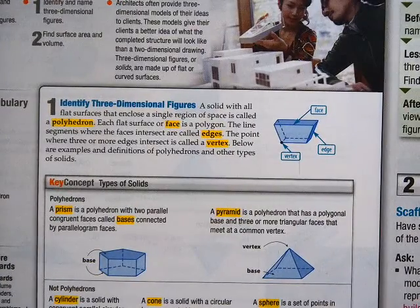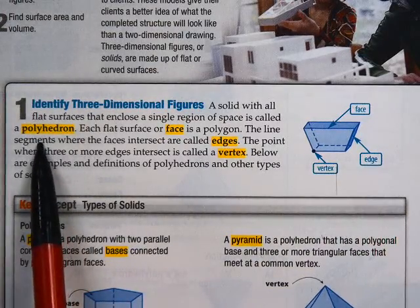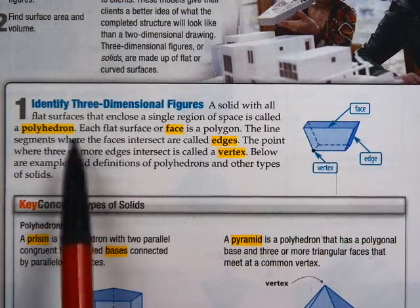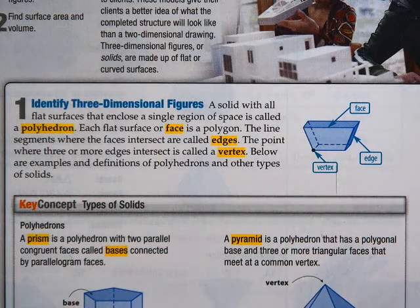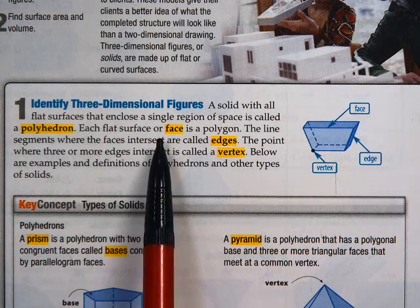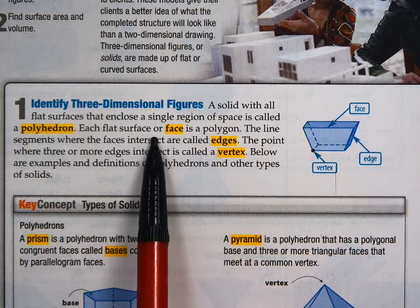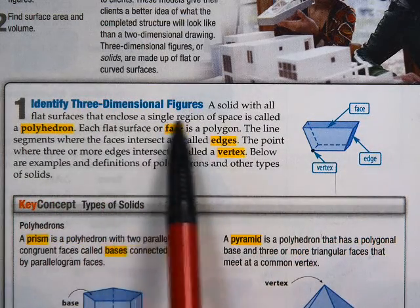Three-dimensional figures. Let me go over a couple definitions while I've got my book open. A polyhedron — a polyhedron is kind of like a polygon. A polygon is made of straight segments; a polyhedron is made up of flat sides, no curved sides. A face is the flat surface. An edge is where the faces come together — if you extend the edge out, it makes a line, so an edge is a segment. A vertex is the point where they all come together.